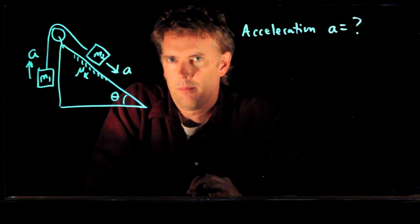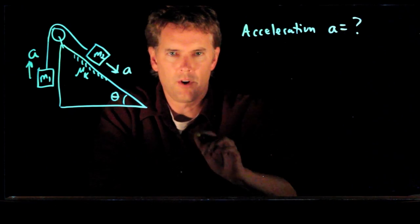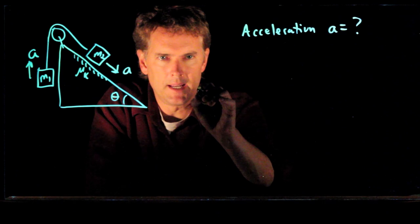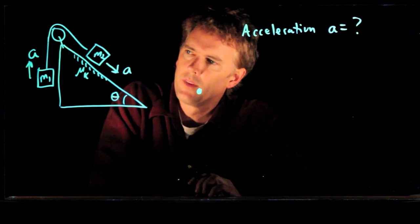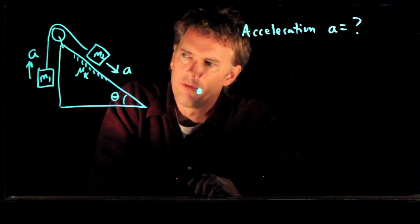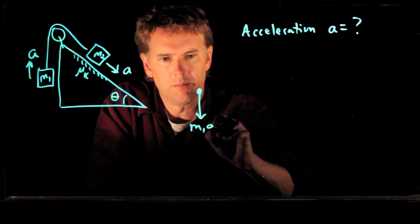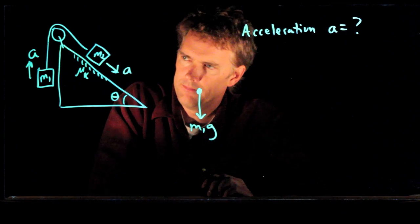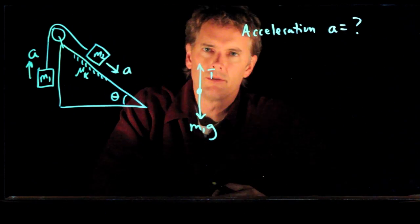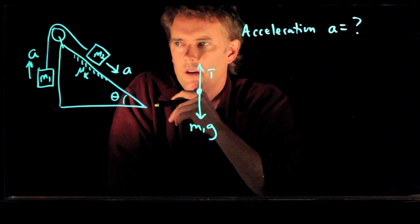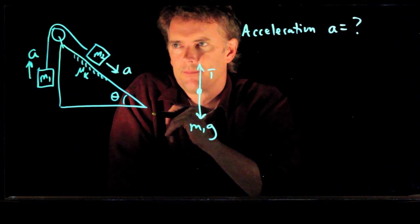The next step is to draw a free body diagram. So let's draw a free body diagram for particle number one, m1. What are the forces on it? Well, of course gravity is pulling down and we have tension T in the cable going up. And that's it for particle one.